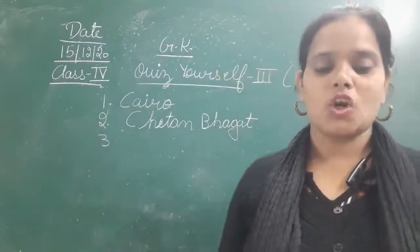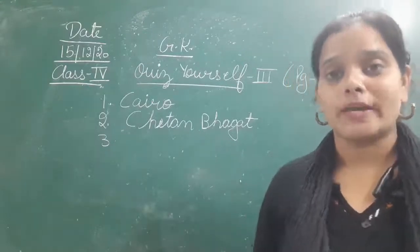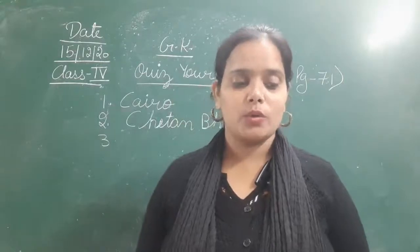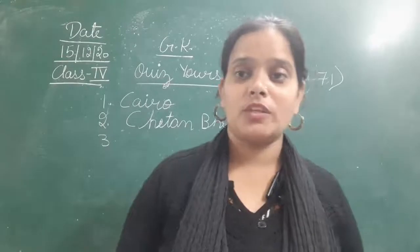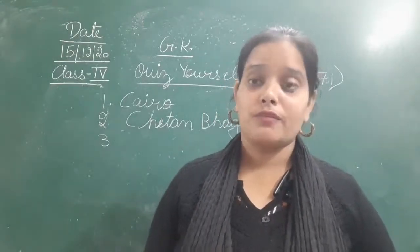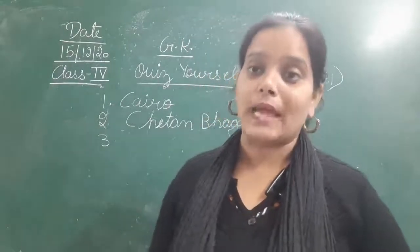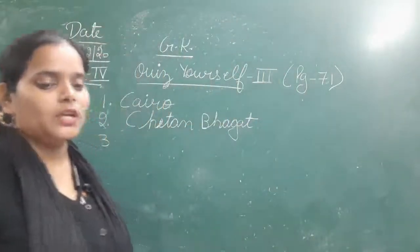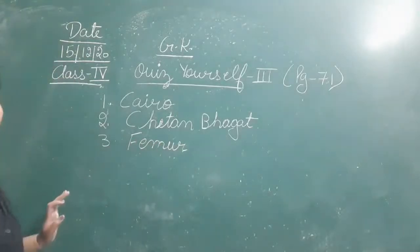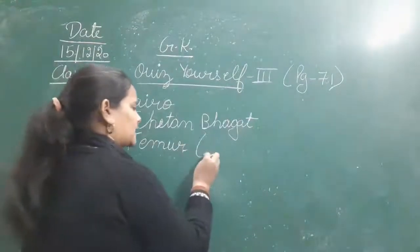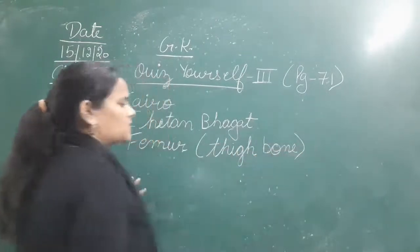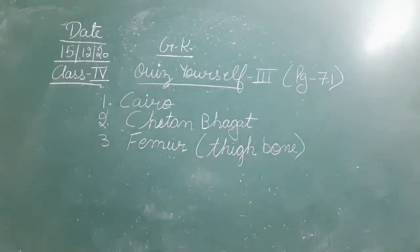The third question is: which is the longest bone in our human body? The answer is femur. Femur is the longest bone in our body, which we also call the thigh bone. So the question is: which is the longest bone in our body? That is femur — F-E-M-U-R. Femur, also known as the thigh bone, is the longest bone in the human body. You can write 'thigh bone' in brackets as a reminder.